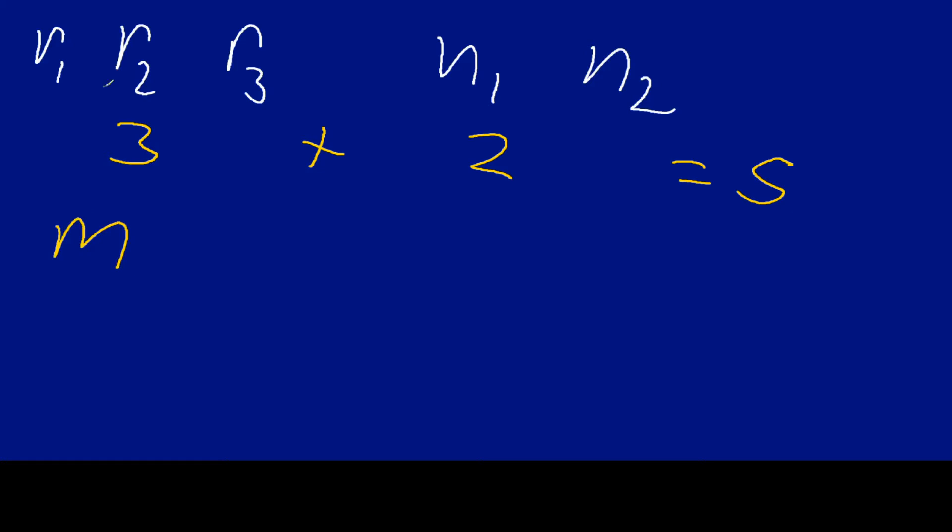And the second event happens N ways. So that's going to be our noodles. And so for rice, M is three, and for noodles, N is two. Then the first and second events can occur M plus N ways. So this is our answer right here.